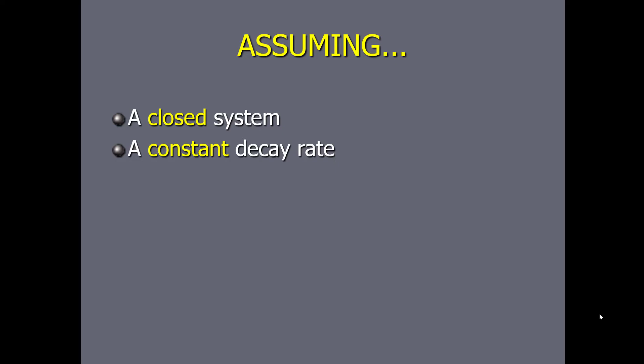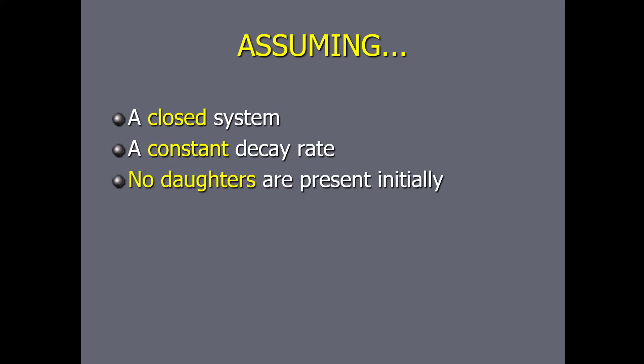The constant decay rate assumption is very reliable because decay rates are actually recalculated every single time an isotopic research project is done — which is basically every day. Radioactivity was discovered in 1902, and between 1902 and 1950 there was a lot of refinement of decay rates. They've been proven over and over again by scientific research, so the odds that this assumption is violated are almost zero.